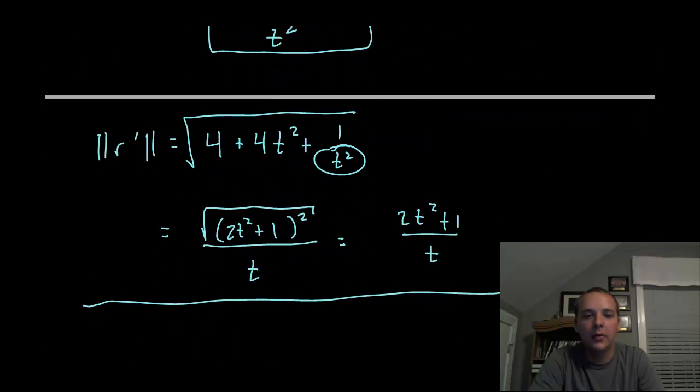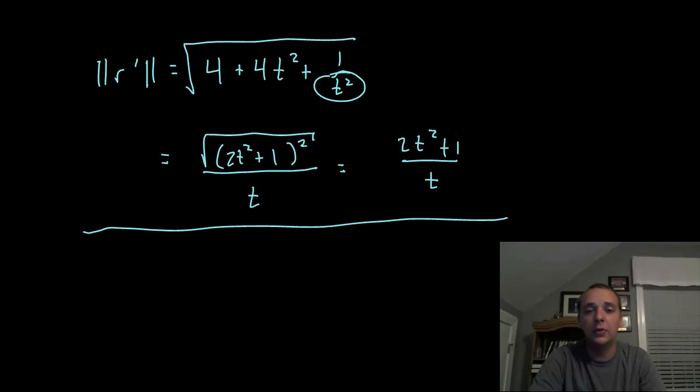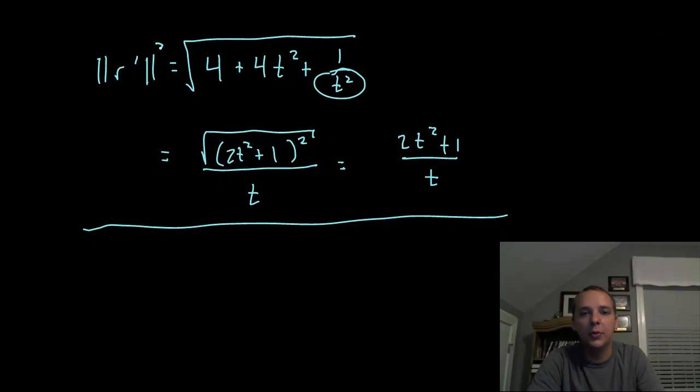The norm of r prime was a fraction, so I have to do 2 things. I need to cube it, so you can cube that and cube that.